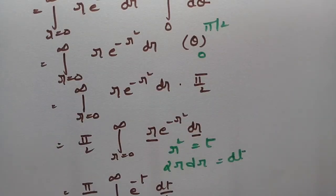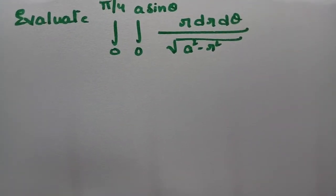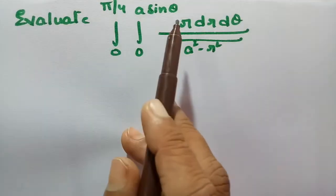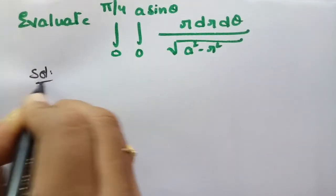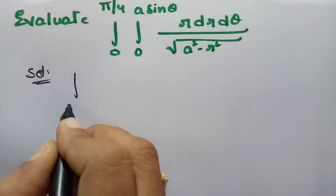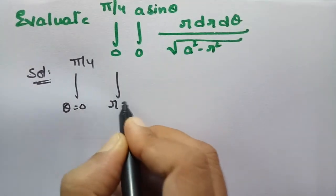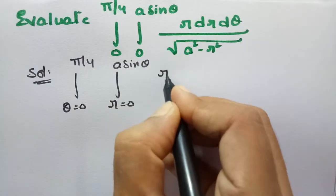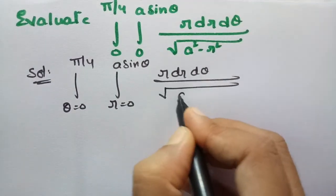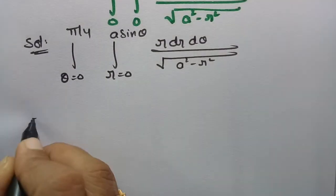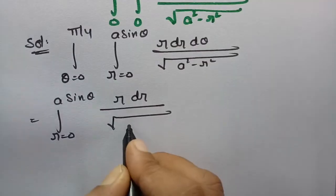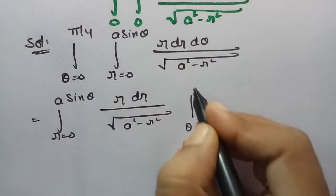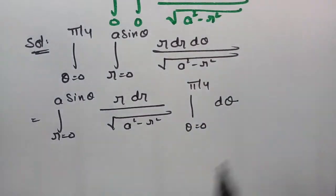There is another important problem. Evaluate integral 0 to pi by 4, integral 0 to a sin theta, r dr d theta divided by root over a squared minus r squared. Here is the solution. First of all I will split the integrals. Theta is equal to 0 to pi by 4, and r is equal to 0 to a sin theta. This is r dr d theta by root over a squared minus r squared. First of all, r goes from 0 to a sin theta, this is r dr by root over a squared minus r squared, and theta varies from 0 to pi by 4, integral d theta.